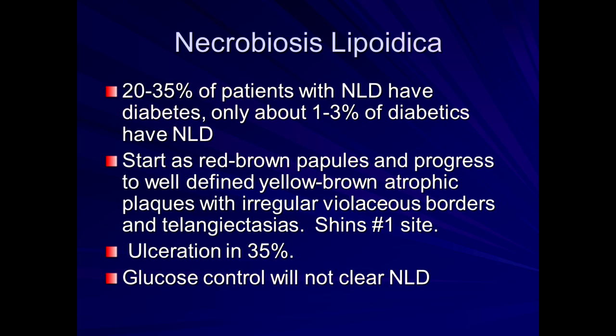Necrobiosis lipoidica (NLD) is very important, particularly for type 1 diabetics. It affects a large percentage of patients with unexplained lesions on the lower legs. They typically look yellowish and atrophic — flat. Twenty to thirty-five percent of patients with this condition have diabetes, and it is predominantly type 1 diabetics. It occurs on the shins, may ulcerate if not treated, does not respond to topical therapy because it's a deep dermal process requiring intralesional shots or systemic therapy. Notably, glucose control does not clear it.